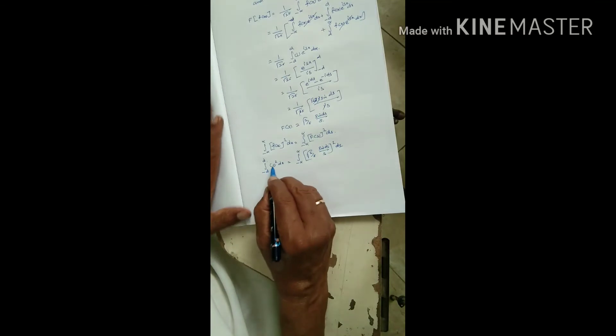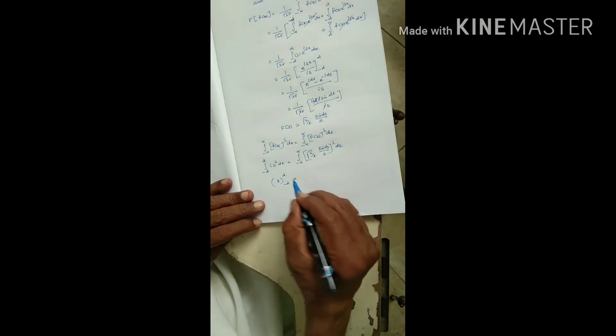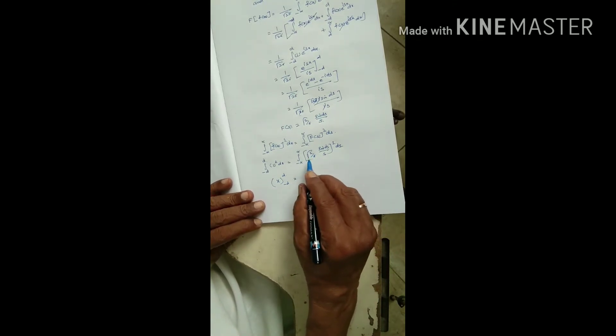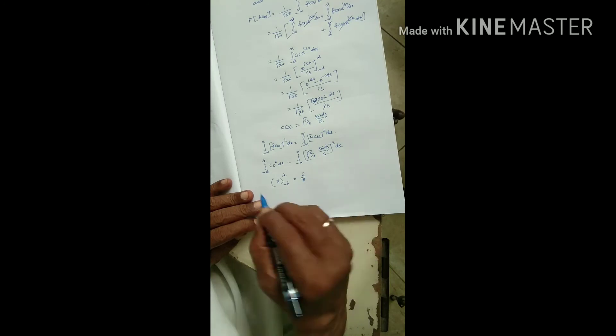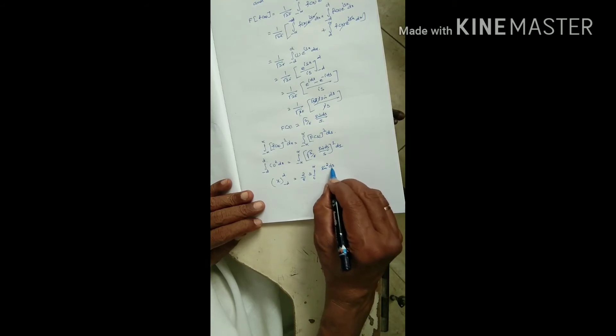The left side: integral from minus d to plus d gives 2d. The right side equals 2 by pi integral 0 to infinity sin square ds by s square ds.